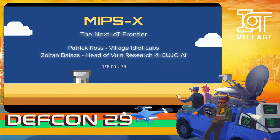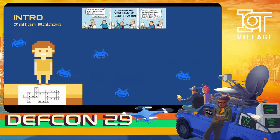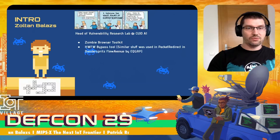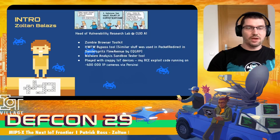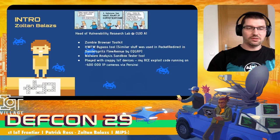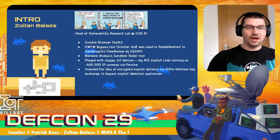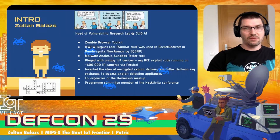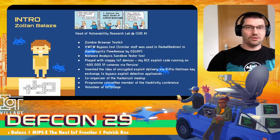My name is Zoltán Balázs, and I'm the Head of Vulnerability Research at Kujo AI. I developed the zombie browser toolkit, the hardware firewall bypass tool, malware analysis sandbox tester tool, played with some crappy IoT devices, and my exploit code ended up running on 600,000 IP cameras. I invented the idea of encrypted exploit delivery. I'm the co-organizer of the Hackersholy Meetup, program committee member of the Hacktivity Conference, and volunteer at IoT Village.